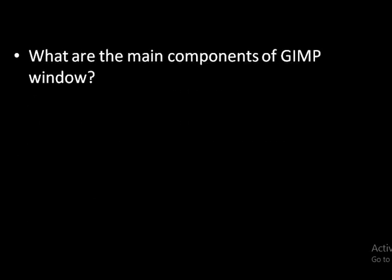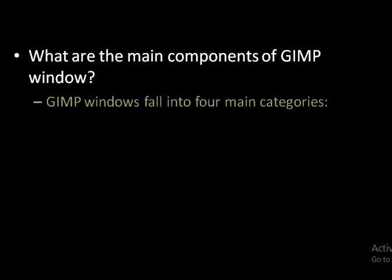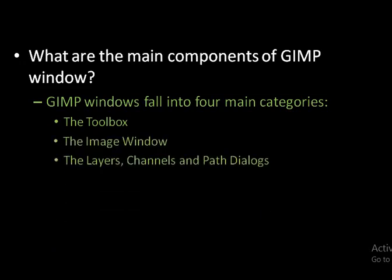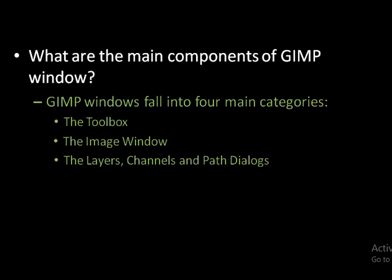Next question: what are the main components of the GIMP window? There are four main parts. The first is the Toolbox, the second is the Image Window, the third is the Layers, Channels and Path Dialogs, and the fourth is Dialogues for Color, Brushes, Patterns, Gradients and Palettes.